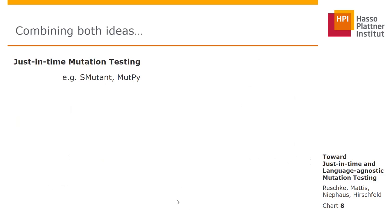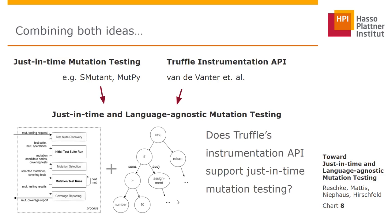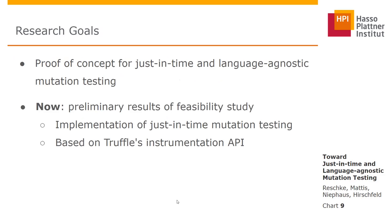Our idea is to combine two things: just-in-time mutation testing — an approach used in dynamic languages like Smalltalk and Python — with Truffle's instrumentation API, which allows us to do AST manipulations at runtime. Both combine to give us just-in-time and language-agnostic mutation testing. The key research question we had for our study is: does Truffle's instrumentation API support just-in-time mutation testing? Our research goal is to provide a proof of concept for just-in-time and language-agnostic mutation testing, showing preliminary results of a feasibility study.